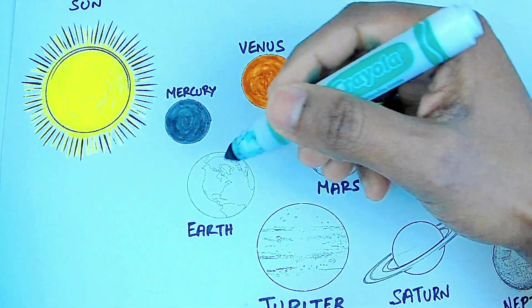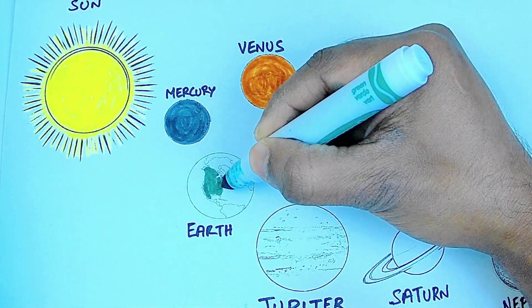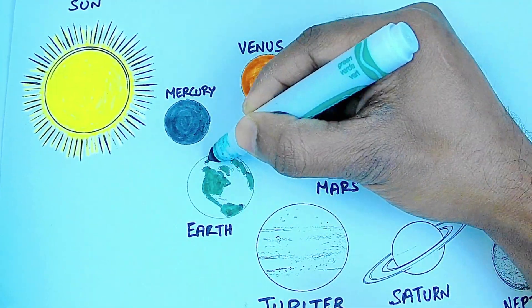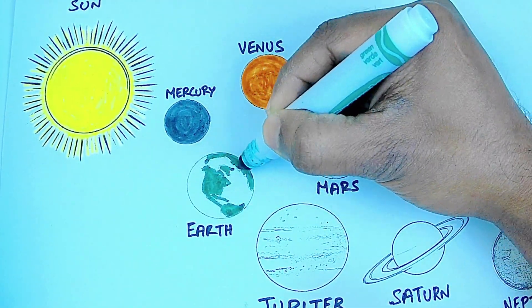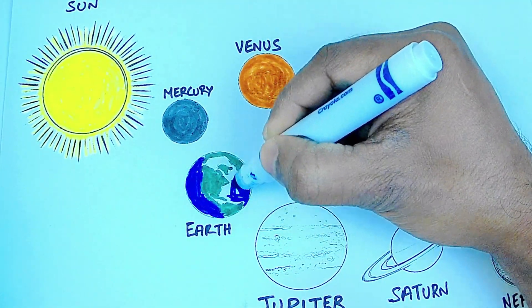This is Earth, the third planet from the Sun. This is the planet we live on. It only has one moon.